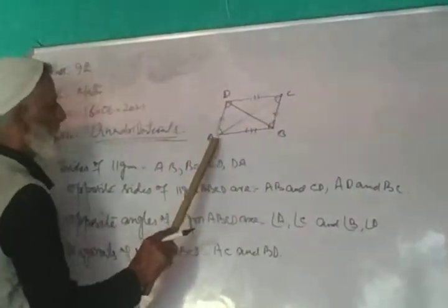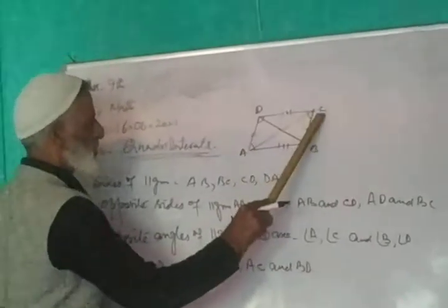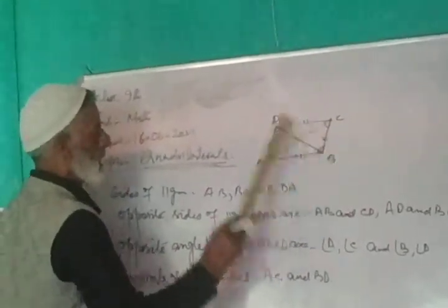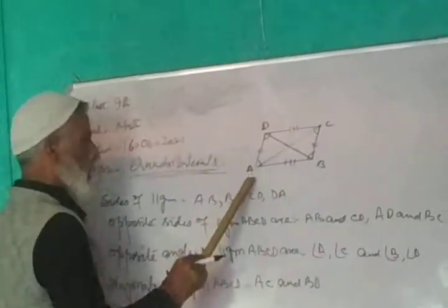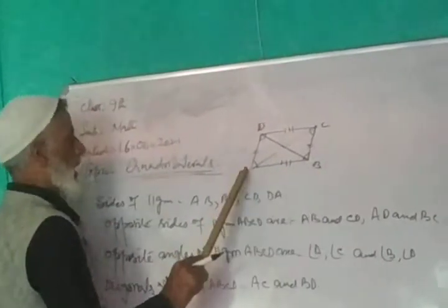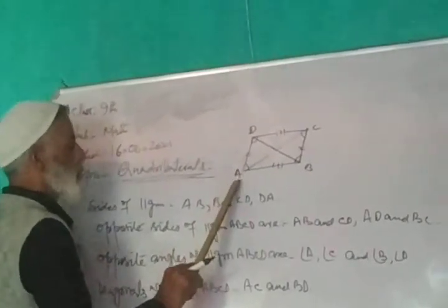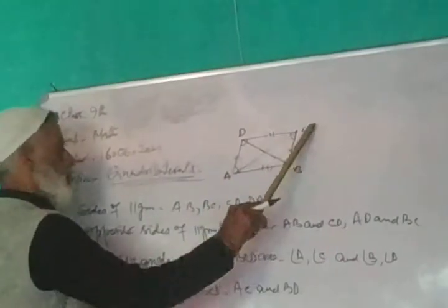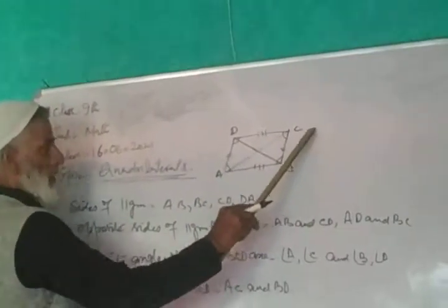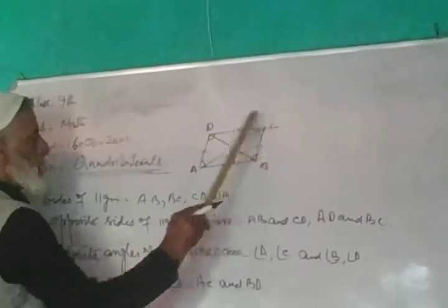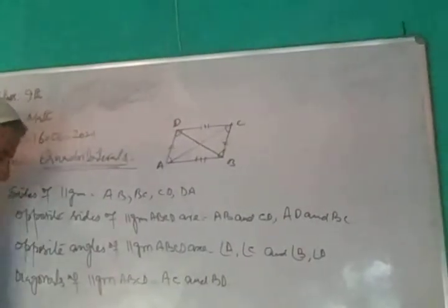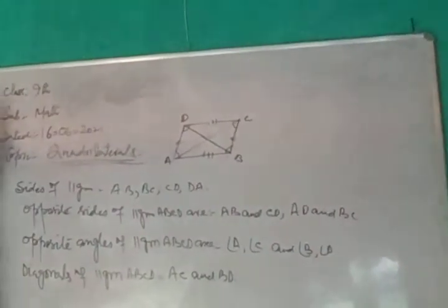We have opposite angles: angle A and angle C are opposite angles, and angle B and angle D are opposite angles. So we can see a parallelogram has diagonals AC and BD. So we have the properties of a parallelogram.